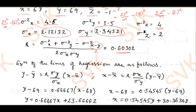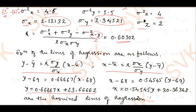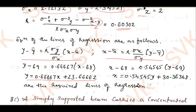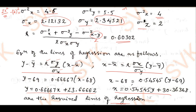For the lines of regression: the line of y on x is: y − ȳ = r·(σy/σx)·(x − x̄). Substituting all known values gives the regression line y on x. For x on y: x − x̄ = r·(σx/σy)·(y − ȳ). Substituting gives the regression line x on y. These are the required lines of regression.